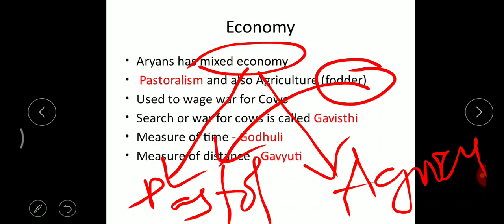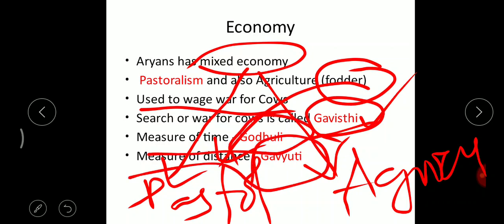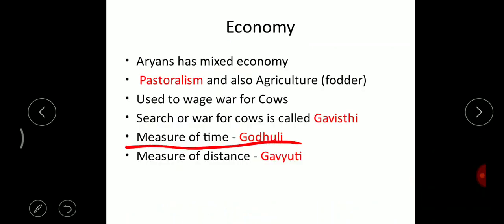Pastoralism was the main economy of the Aryans. They used to wage war for cows. There used to be Gramas — that is, villages or regions — and war between villages was called Sangrama. They mostly waged war for Gavisthi, meaning in search of or to capture cows. Gavisthi is also the measure of time and the measure of distance in the early Vedic period.